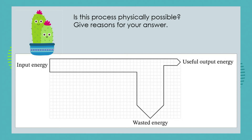This question will test your knowledge not only of Sankey diagrams but also of the law of conservation of energy. We have a Sankey diagram showing input, useful output, and wasted energy for a general machine. The question is: is this process physically possible? We can't just guess — we have to explain why. First, the arrows are in the right direction, so it has nothing to do with the direction of energy transfer.